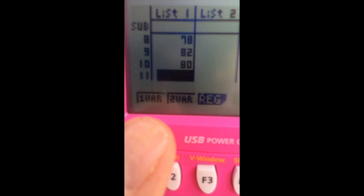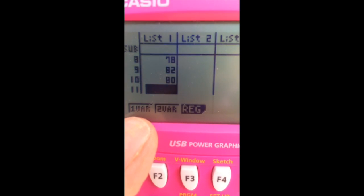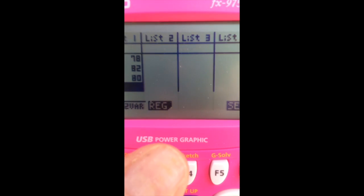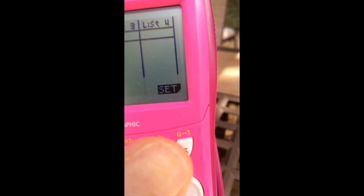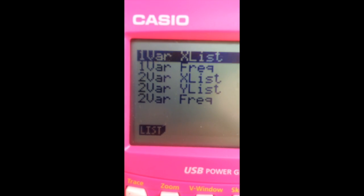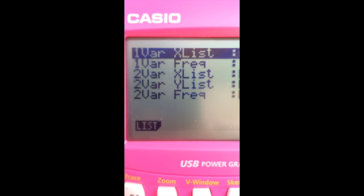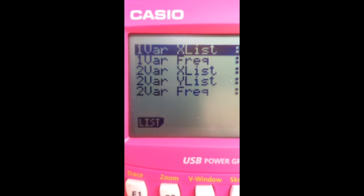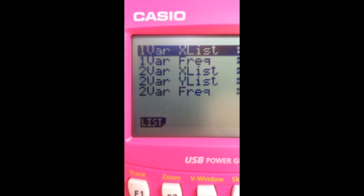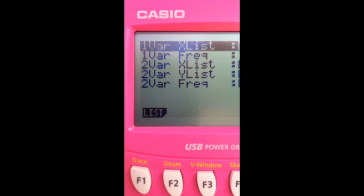Now, the option we want will be one variable. But, before we do that, I have to make sure I'm set. So, I hit F6, where it says Set. Now, these are the choices we have. One variable, list, and frequency. I've got two choices. And for two variables, I've got X and Y and frequency.